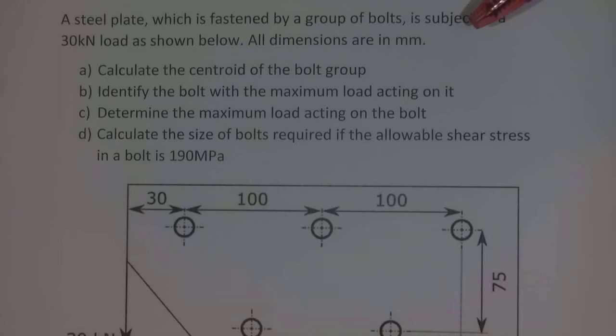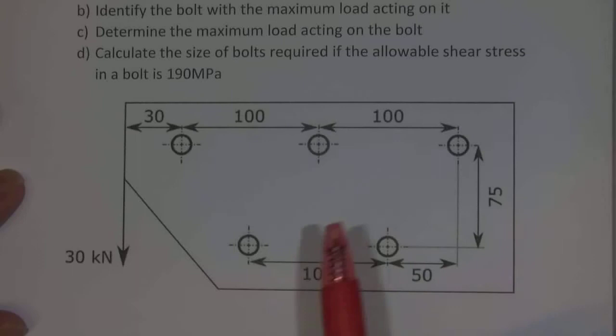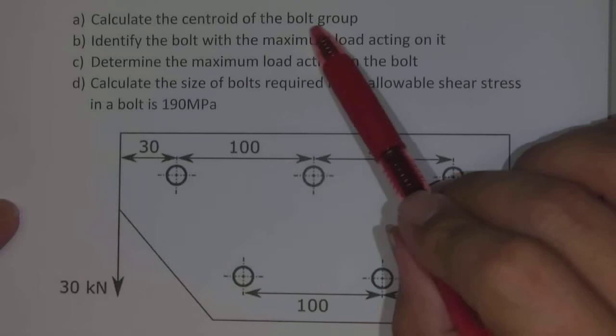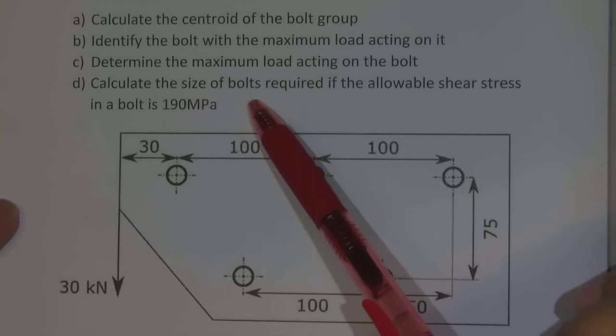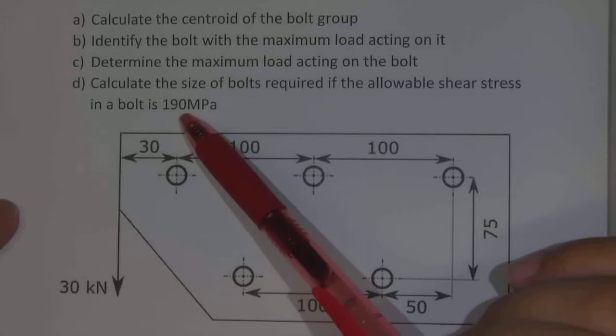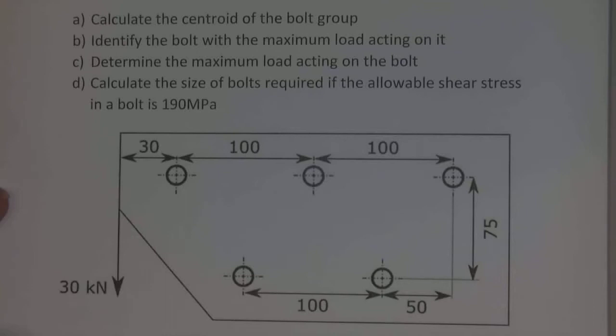A steel plate which is fastened by a group of bolts is subjected to a 30 kilonewton load as shown below. All dimensions are in millimeters, and we're asked to calculate the centroid of the bolt group, to identify the bolt with the maximum load acting on it, to determine the maximum load acting on the bolt, and then to calculate the size of the bolts required if the allowable shear stress in a bolt is 190 megapascals.